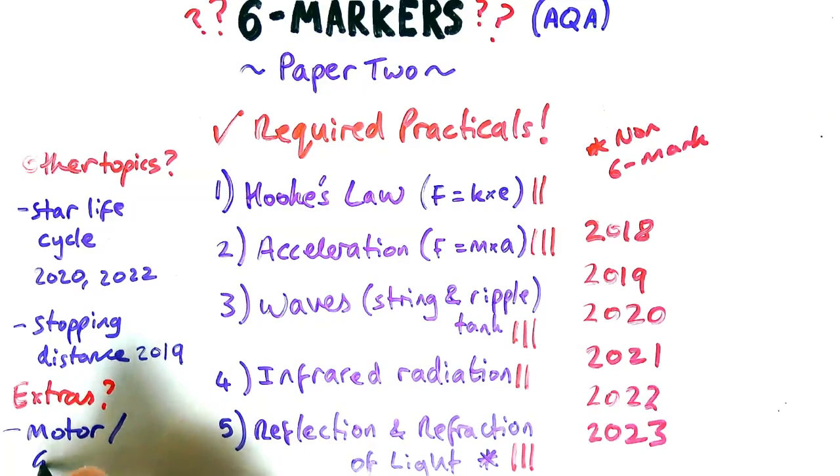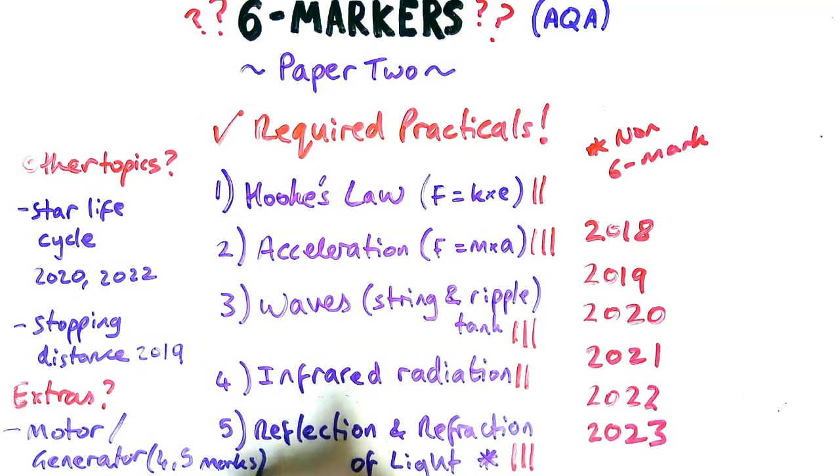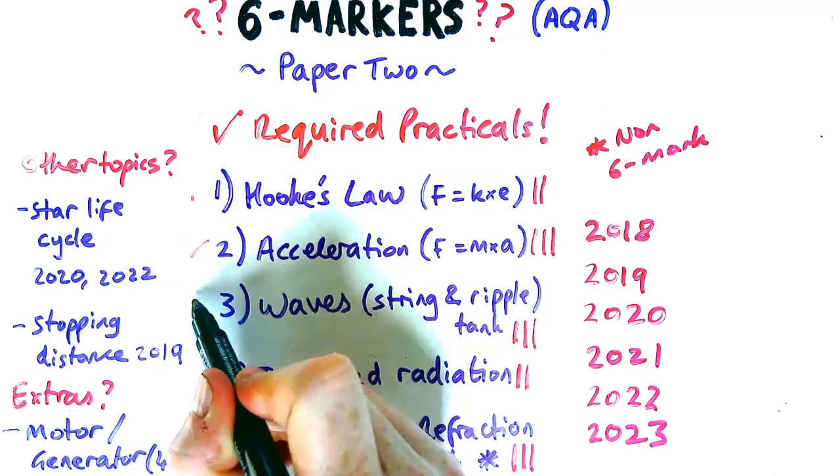And then you could also get a six marker about anything to do with motors or generators, which are an extra effect. Usually there's four or five marks, so revise them anyway. That could be a six mark question. So make sure you revise these things.